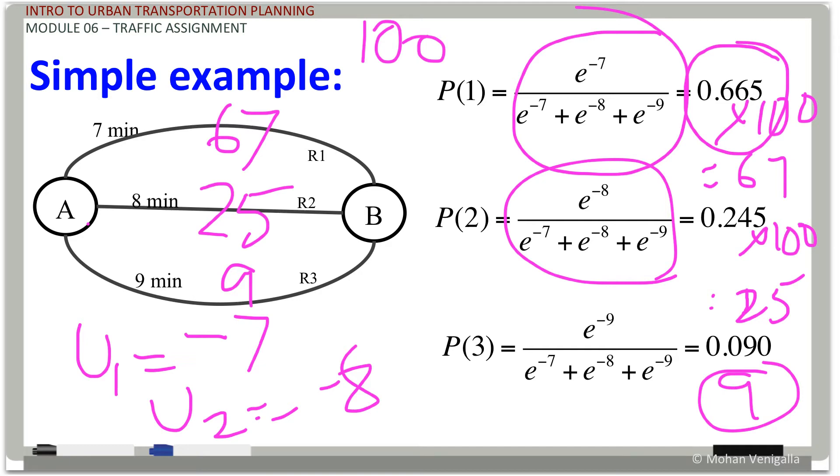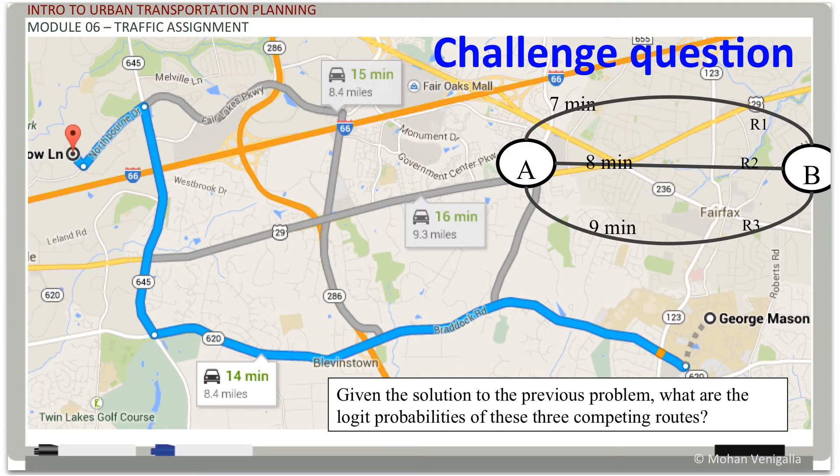So your traffic assignment on this network is, this guy got 67 trips. Route 2 got 25 trips. And Route 3 got 9 trips. Simple enough, right? Let's see the complications. What are the complications? Oh, sorry. Before we get to the complications, here is a challenging question.